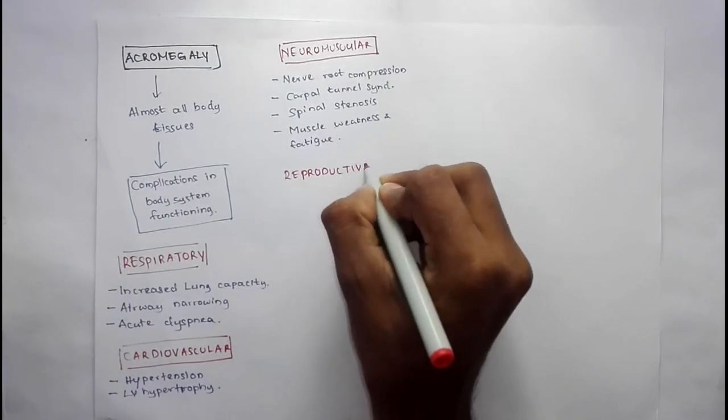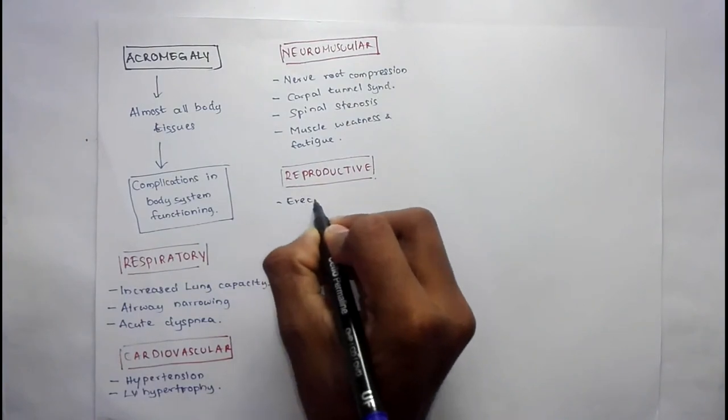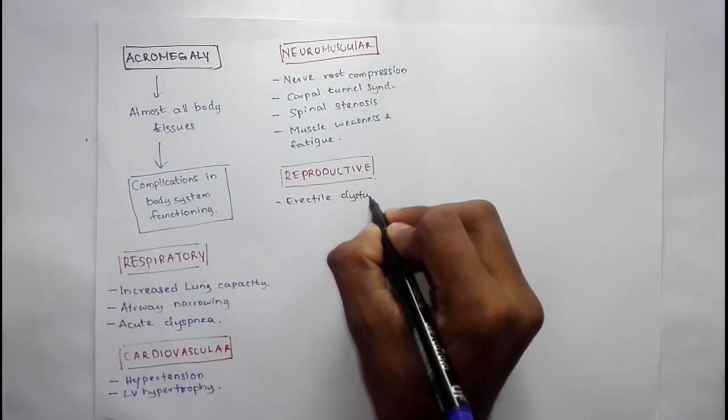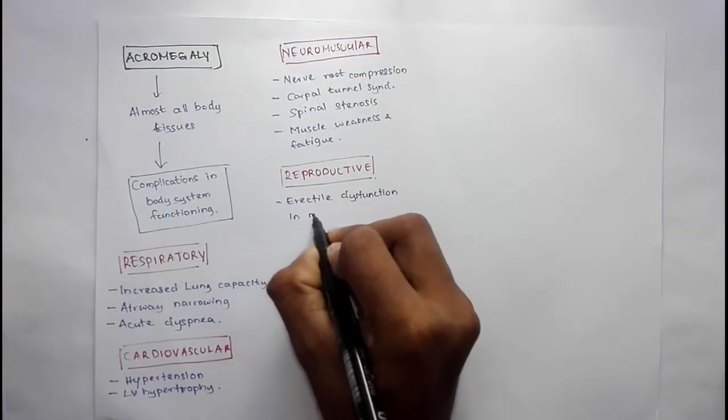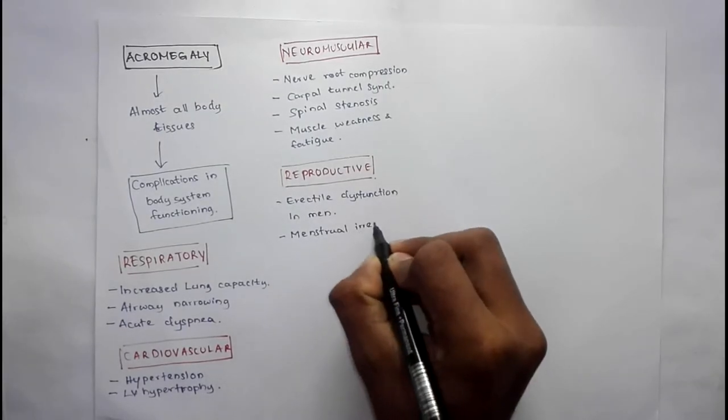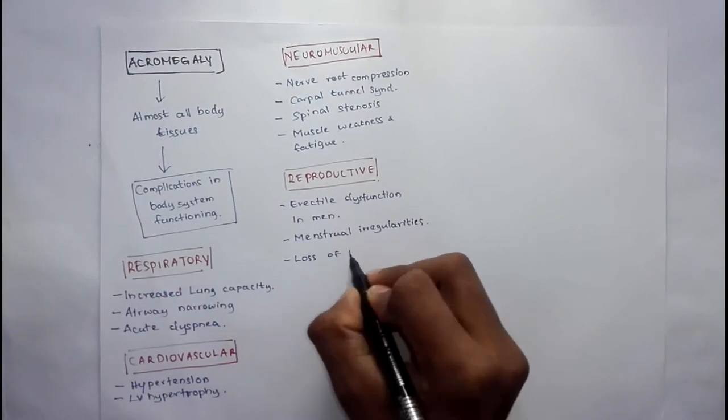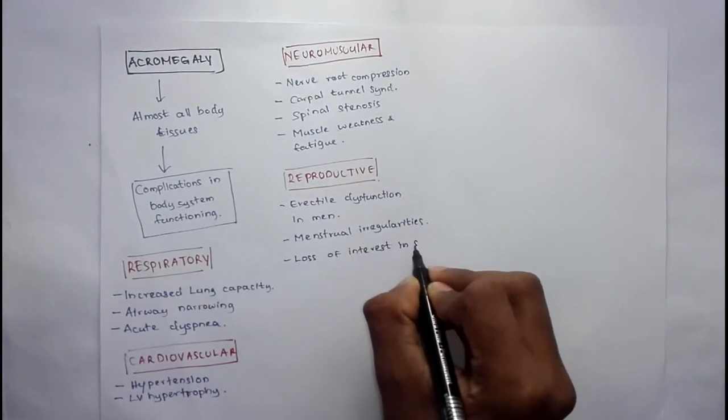Reproductive complications are erectile dysfunction in men, menstrual irregularity in women, and loss of interest in sex in some people.